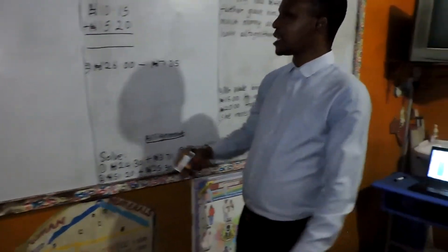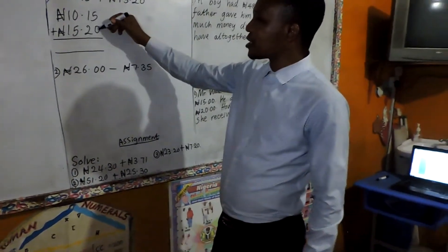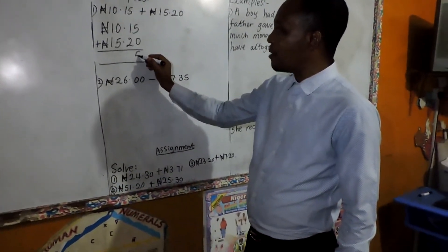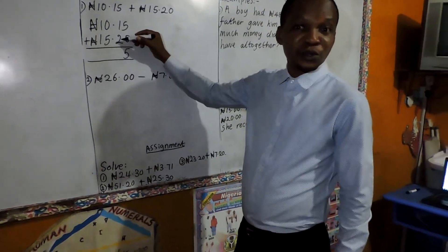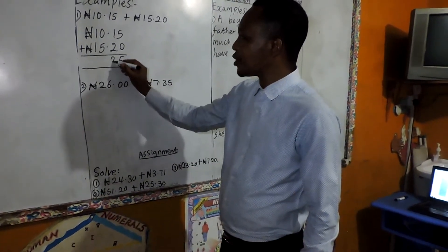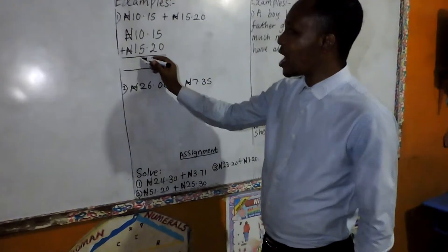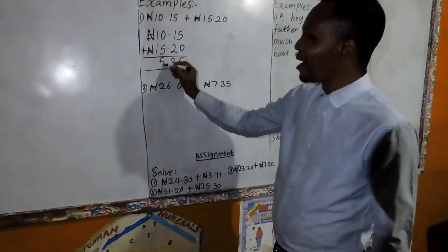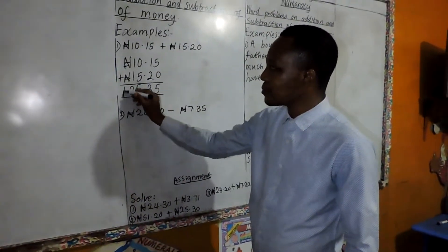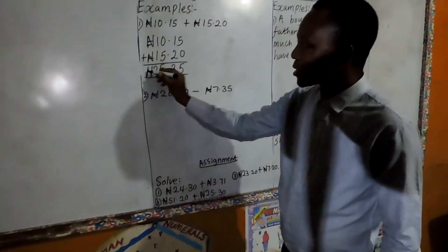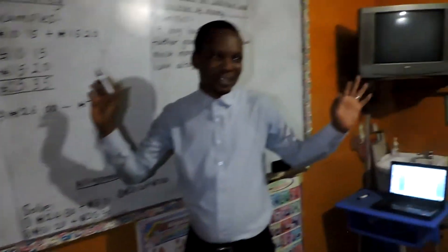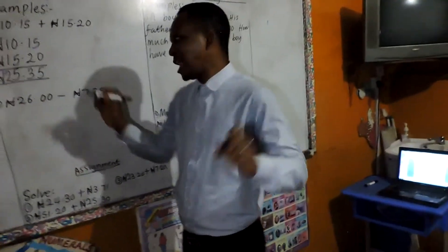Okay, let's add now. 5 plus 0 will give us what? 5. 1 plus 2 is what? 3. 0 plus 5 is what? 5. And 1 plus 1 gives us what? 2. You see that? Very simple. Easy. Nice.